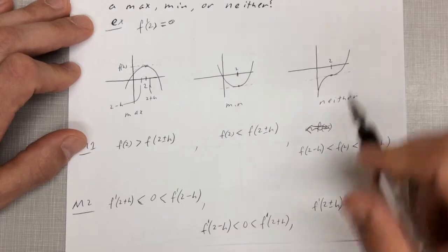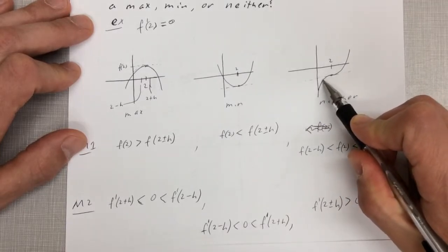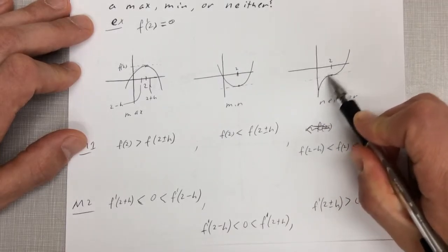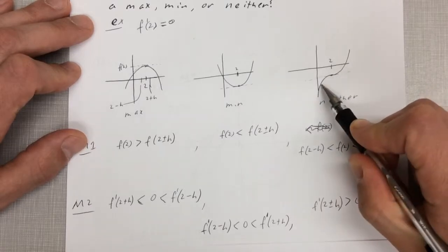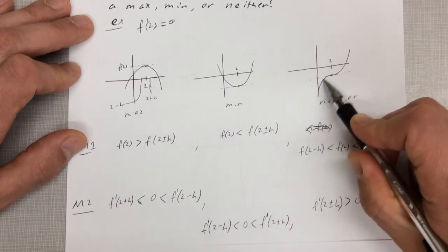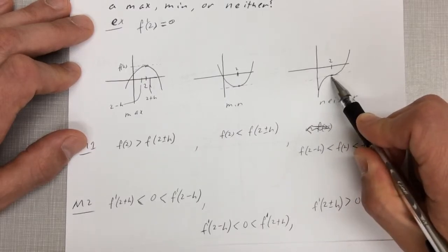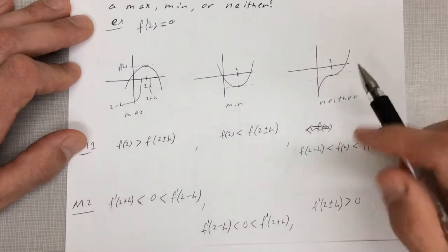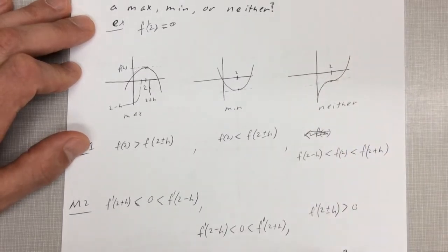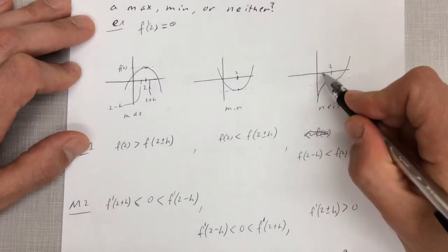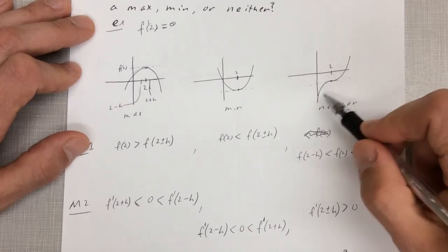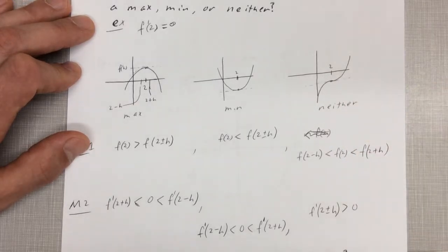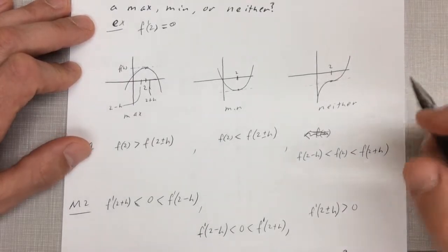If the derivative is positive on both sides, the function doesn't go through a maximum or minimum. Similarly, if it's negative on both sides, there's no local max or min. If the derivative has the same sign on both sides of that point, you don't have a local max or min.